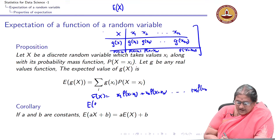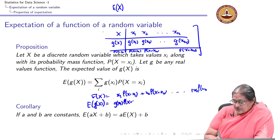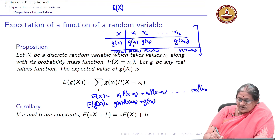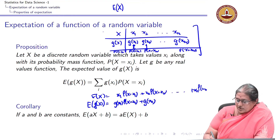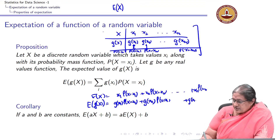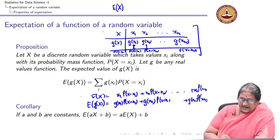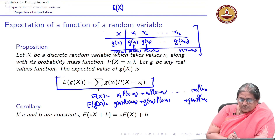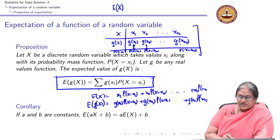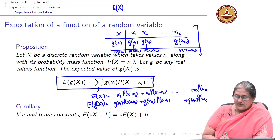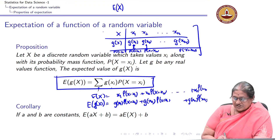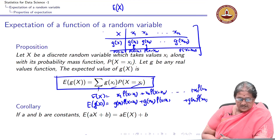I can define expectation of g(x) to be g(x1)·P(x=x1) + g(x2)·P(x=x2) + ... + g(xn)·P(x=xn), because g(x) takes value g(xi) with probability P(x=xi). This is summarized as: expected value of g(x) = summation over all values of x of g(xi)·P(x=xi).